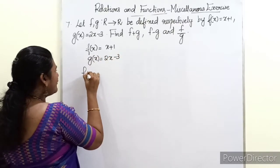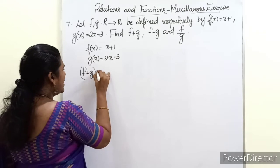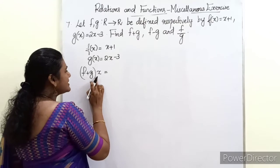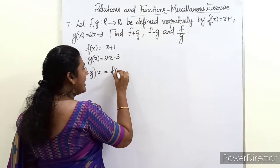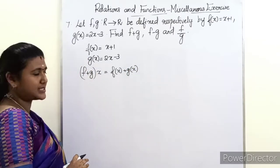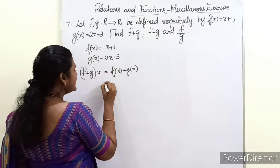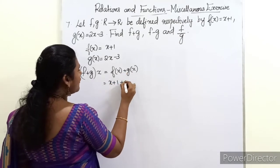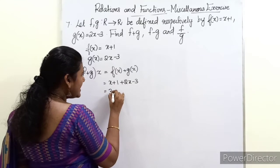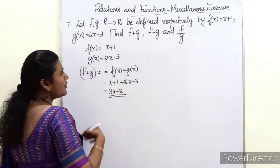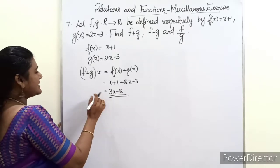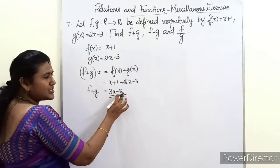The first one: f + g of x. The definition of addition of real functions is (f + g)(x) = f(x) + g(x). Here f(x) = x + 1 and g(x) = 2x - 3. Adding these, we get 3x - 2. So f + g = 3x - 2.